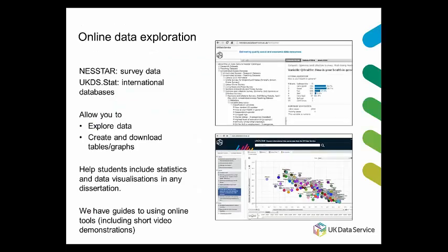In addition to downloading data, some collections can be accessed via online tools. Two of these are NESSTAR, a tool for exploring many of our survey datasets, and UKDS.stat, a tool for exploring international databases. These online tools allow you to explore data and make tables and graphs which can then be downloaded. This option can be good for students who are collecting their own data but are looking for additional data to support their discussions — for example, a chart showing the prevalence of a social phenomenon.